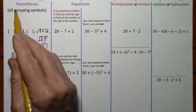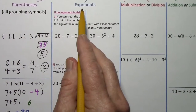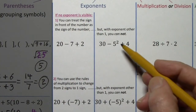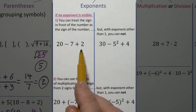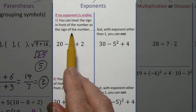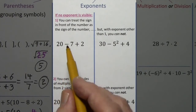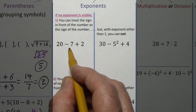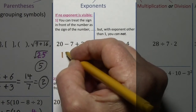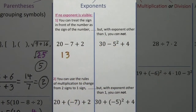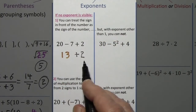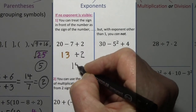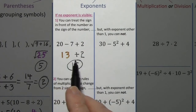After parentheses or all grouping symbols, your next concern is exponents. It may be helpful to repeat that you can treat the sign in front of a number as the sign of the number. So positive 20 and negative 7 — signs are different, subtract, keep the sign of the larger, then bring down whatever you haven't touched. Now the signs are the same, so you add and keep the sign. This works fine as long as there's no exponent other than one.